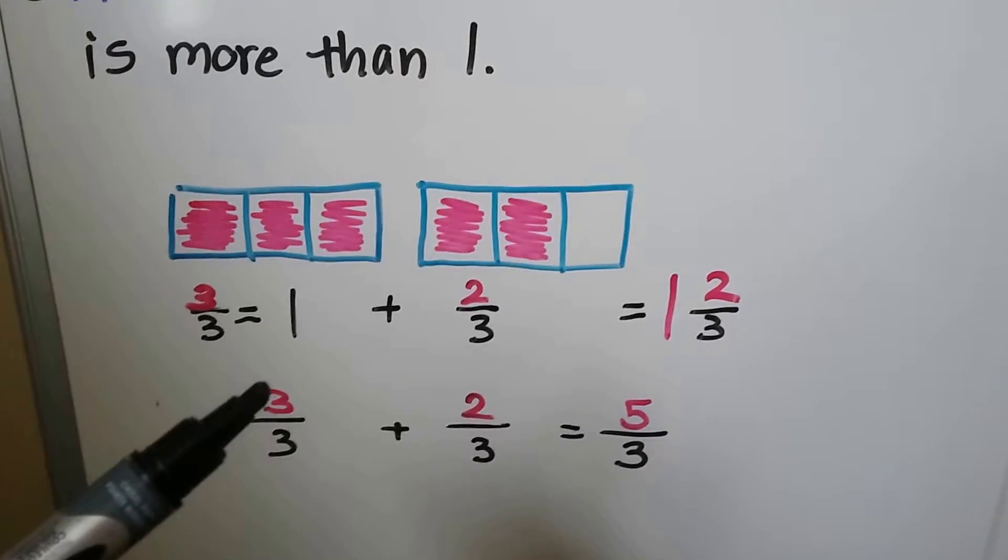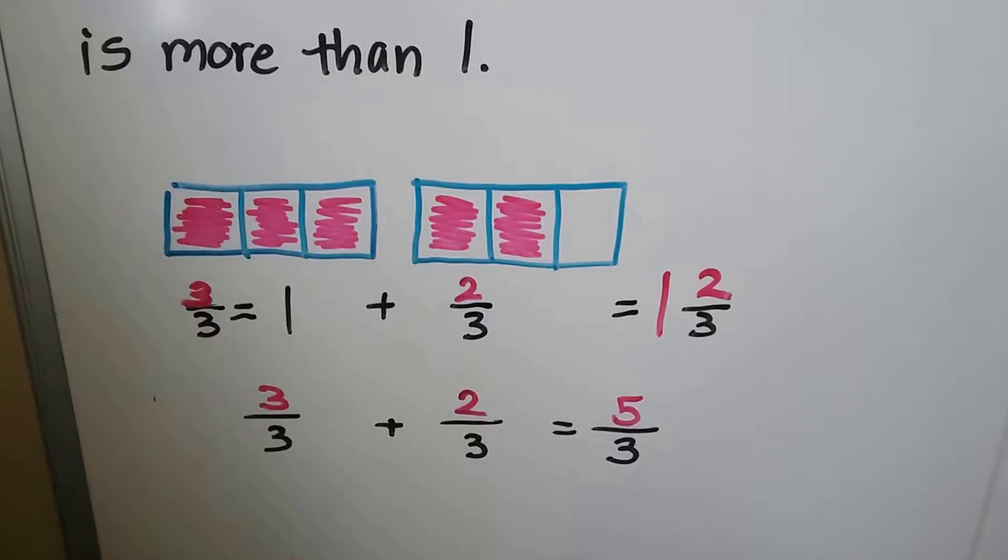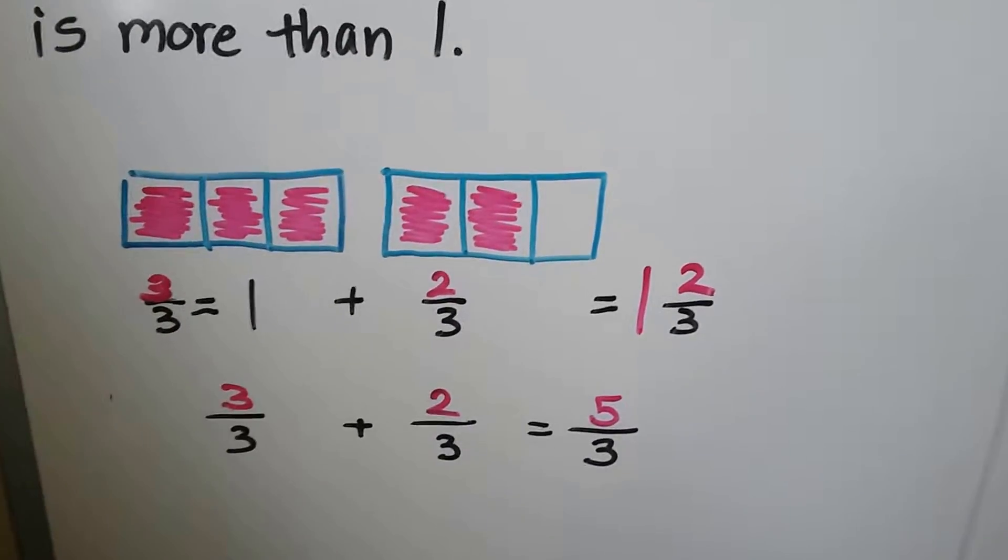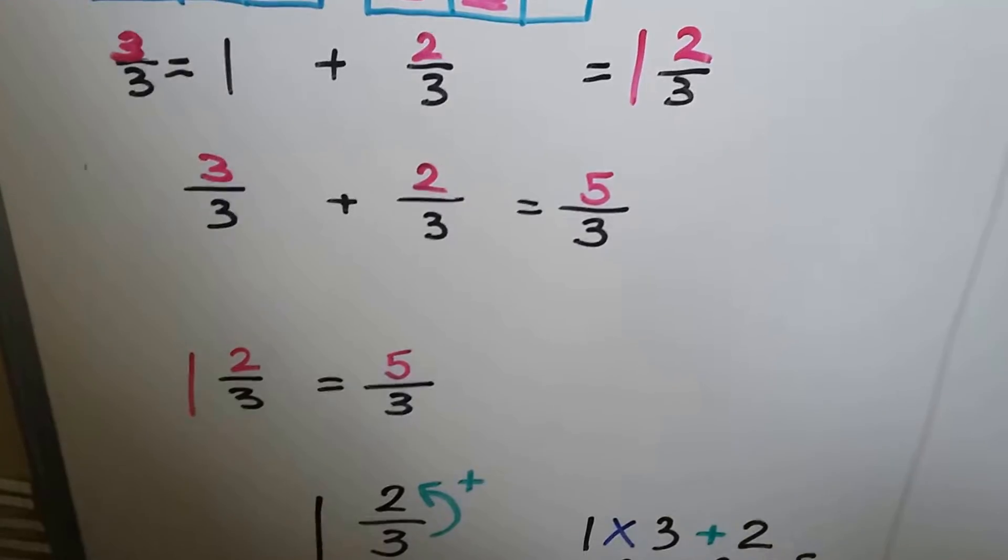We can also look at this as the 3 thirds plus the 2 thirds equals 5 thirds. We're going to get more into addition in future videos coming up. So 1 and 2 thirds is the same thing as 5 thirds.